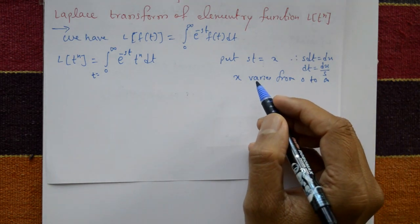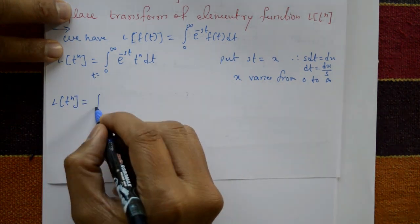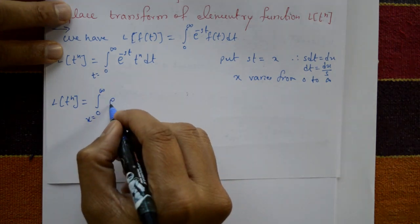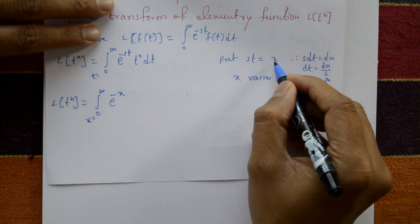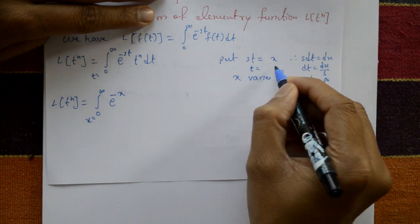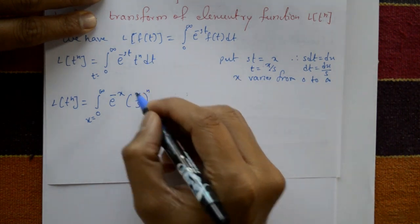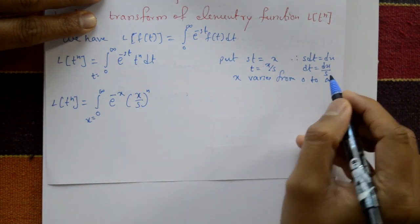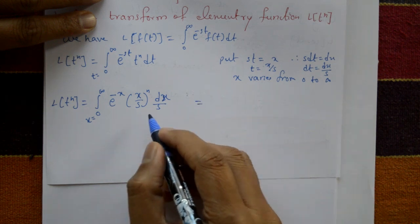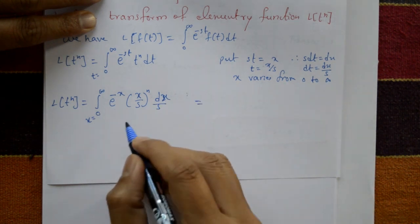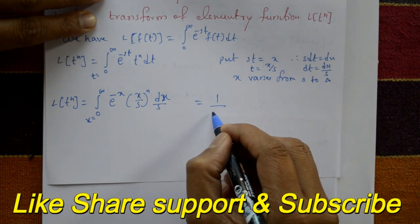With respect to x, from 0 to infinity, the Laplace transform L of t raised to n equals the integration from 0 to infinity. Since st equals x, we have t equals x by s. Taking s as a constant, we factor outside: 1 upon s to the power n, and with the extra 1 upon s, this becomes 1 upon s to the power n plus 1.